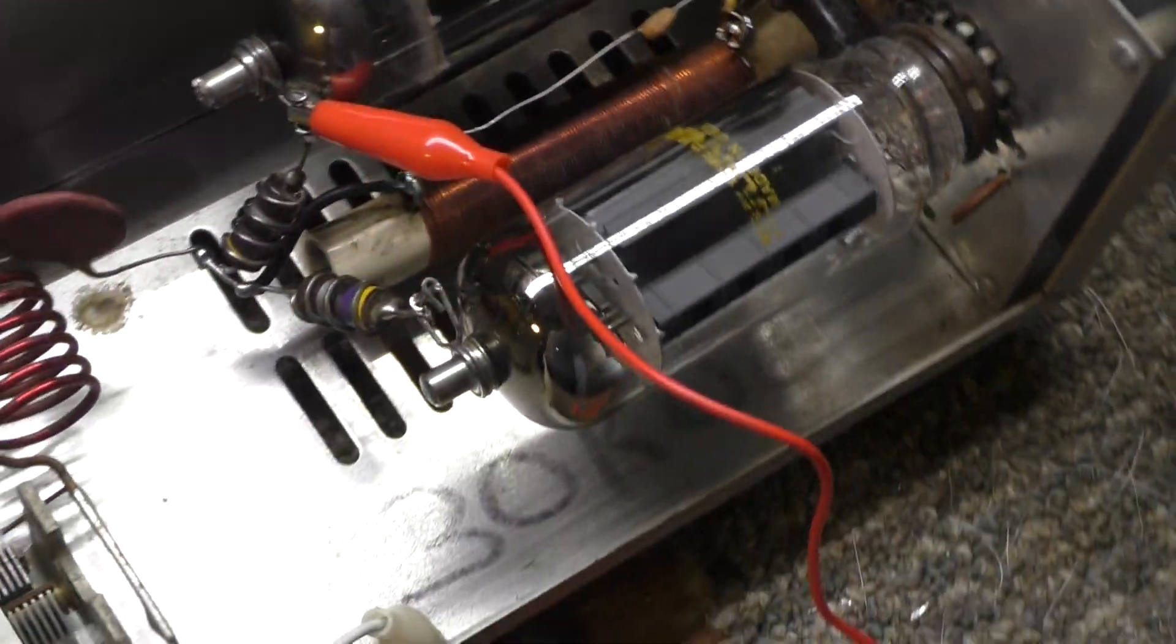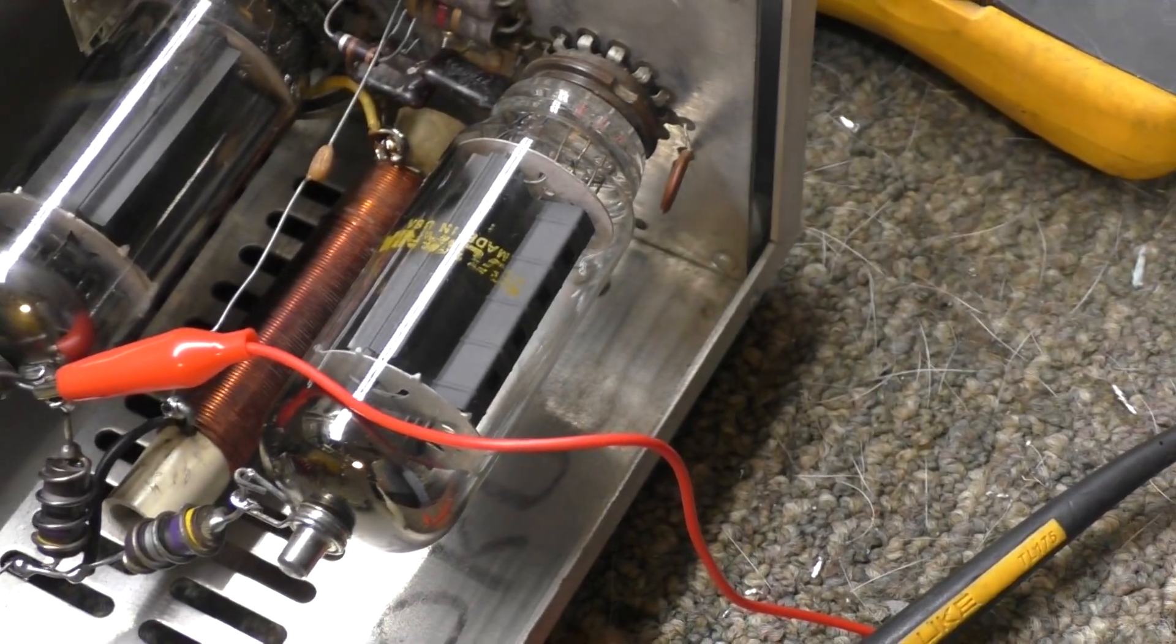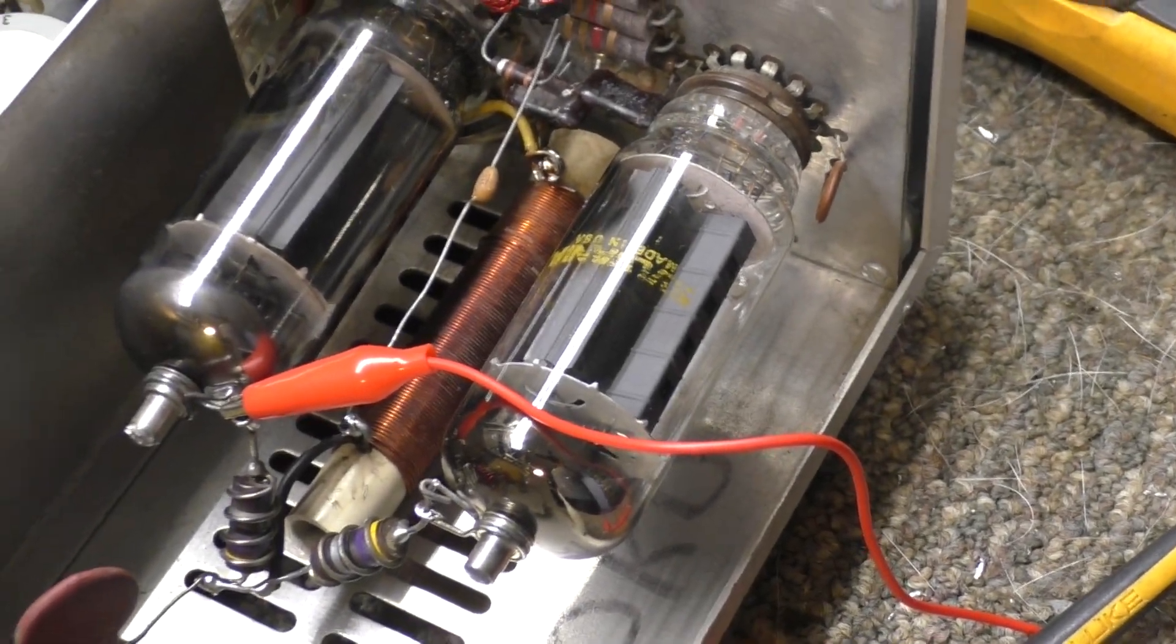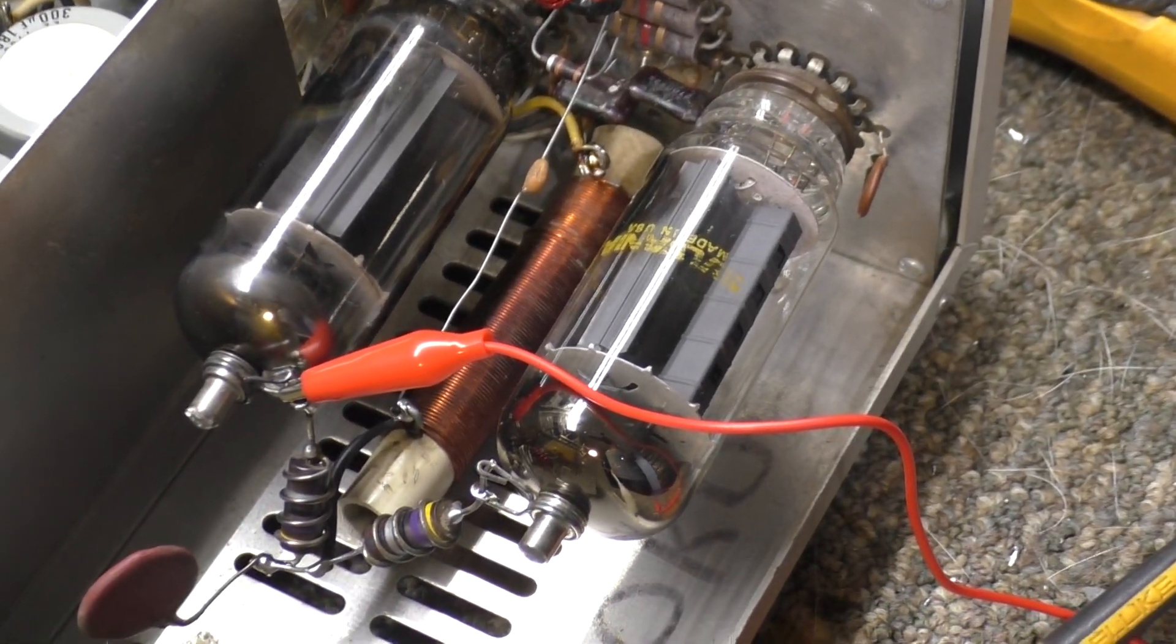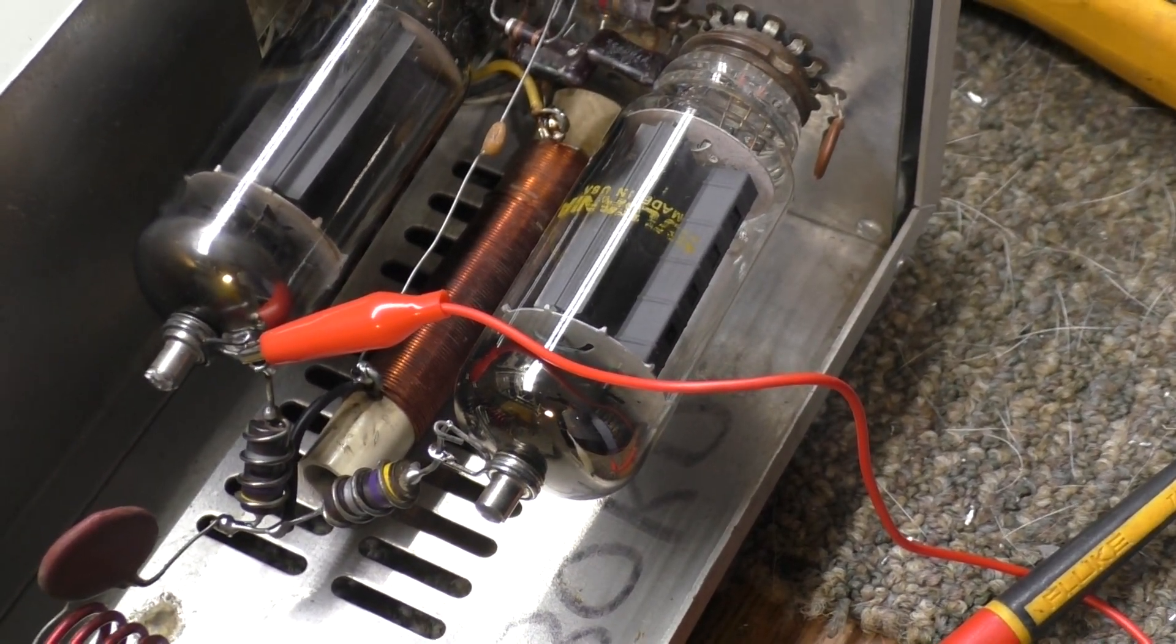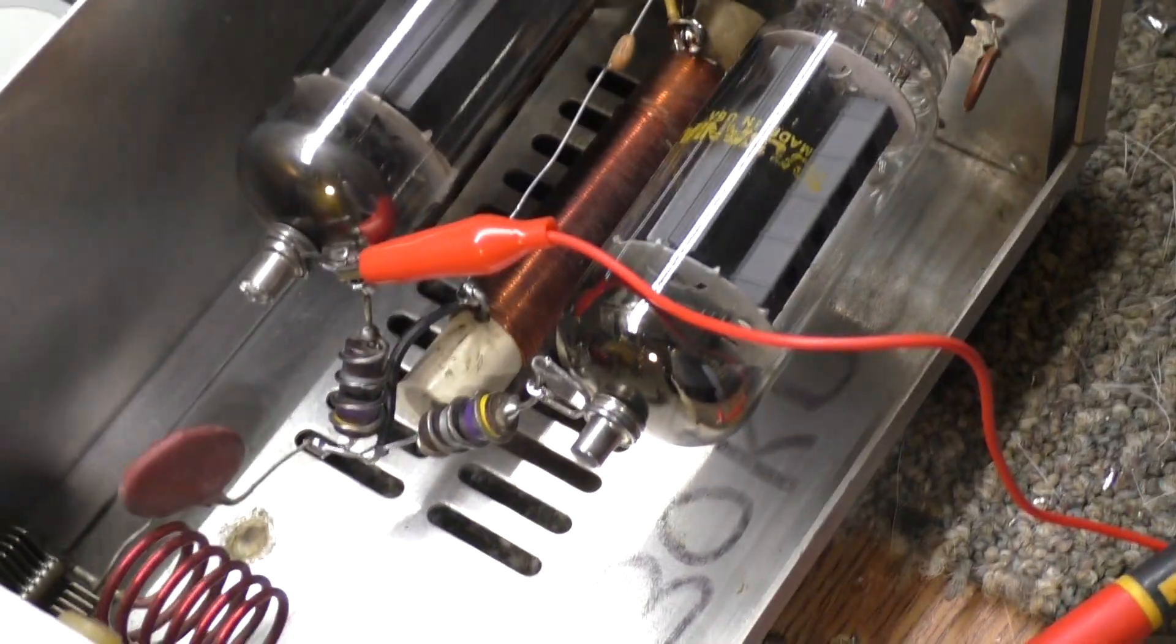And then for the filament and low voltage, it takes two 30KD6 tubes, basically 6LF6 with 30 volt filaments, and it uses two of them in series.